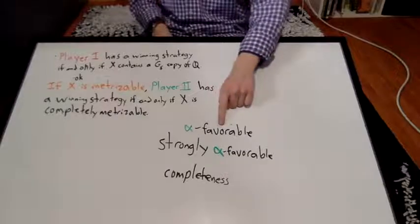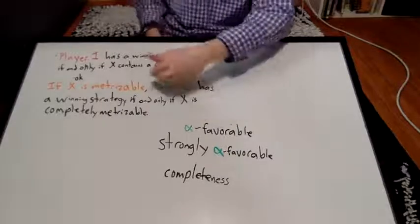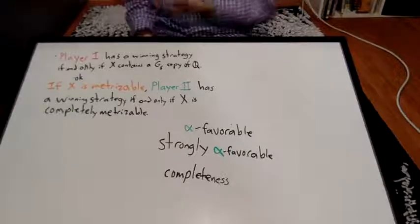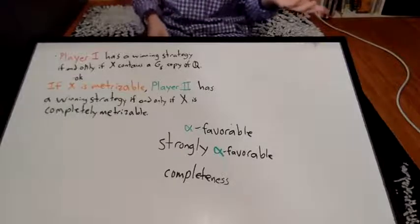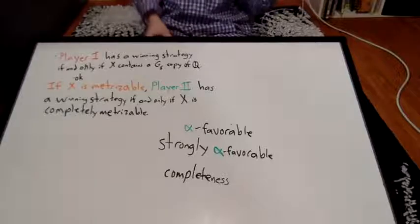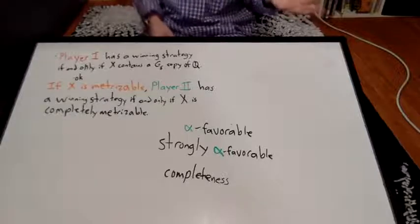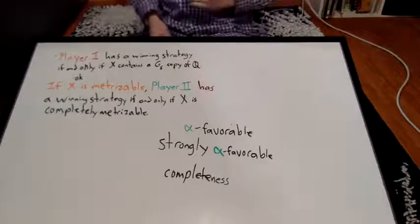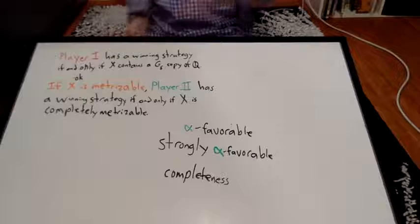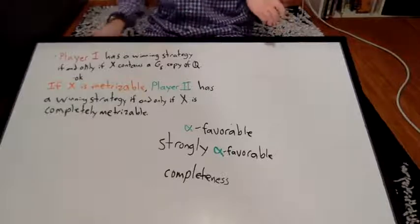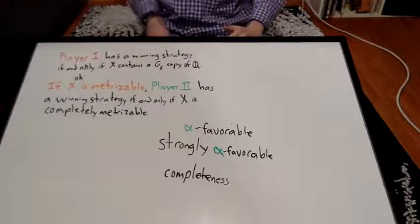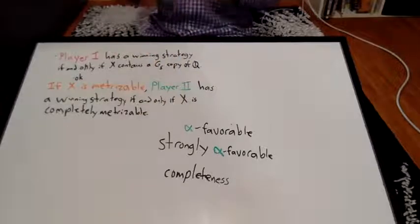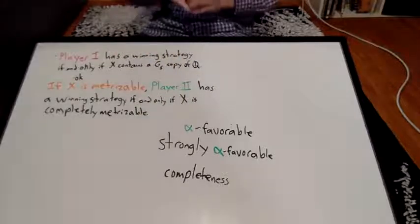It's the same as saying player 2 has a strategy in the Shokei game on X. So with that, there's some terms associated with the Shokei game, as with BM of X. Remember that weakly alpha favorable meant that player 2 had a winning strategy on BM of X, sometimes called the Shokei game. So alpha favorable means that player 2 has a winning strategy on this game, the Shokei game, also sometimes called the strong Shokei game.